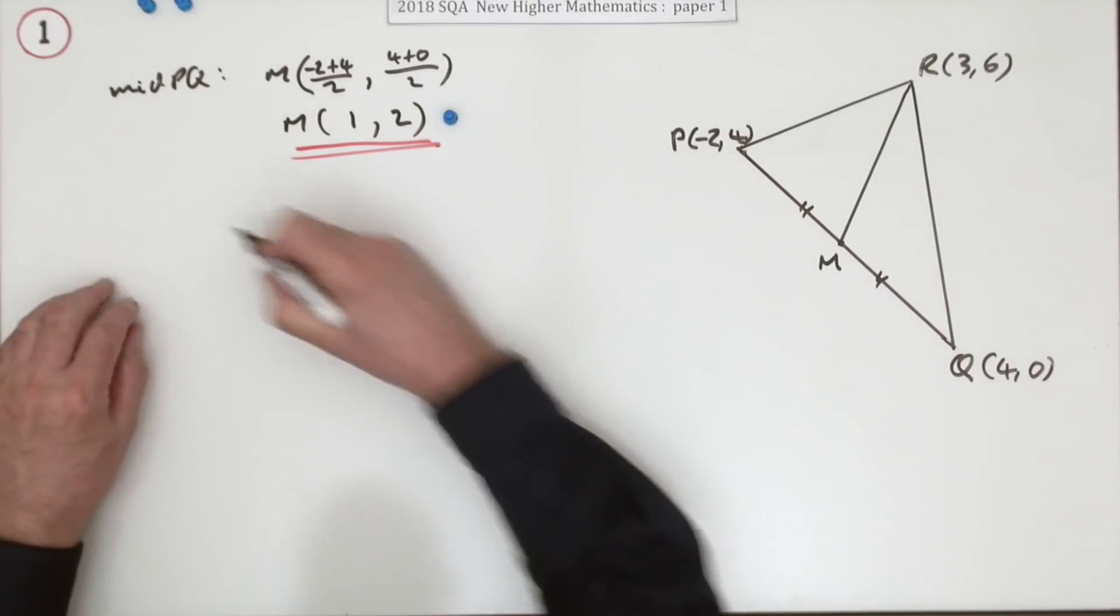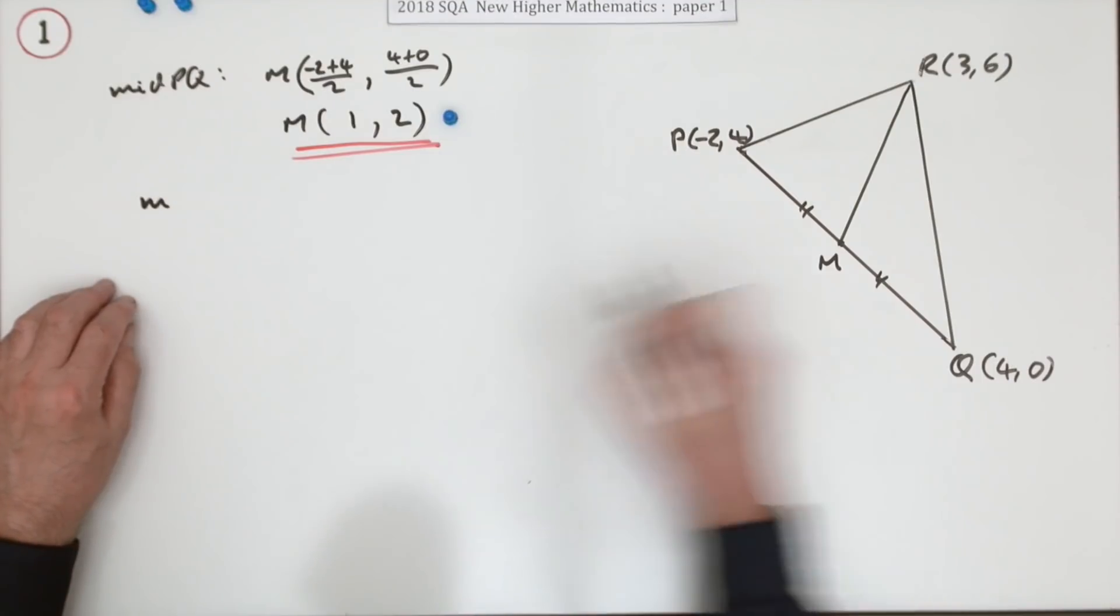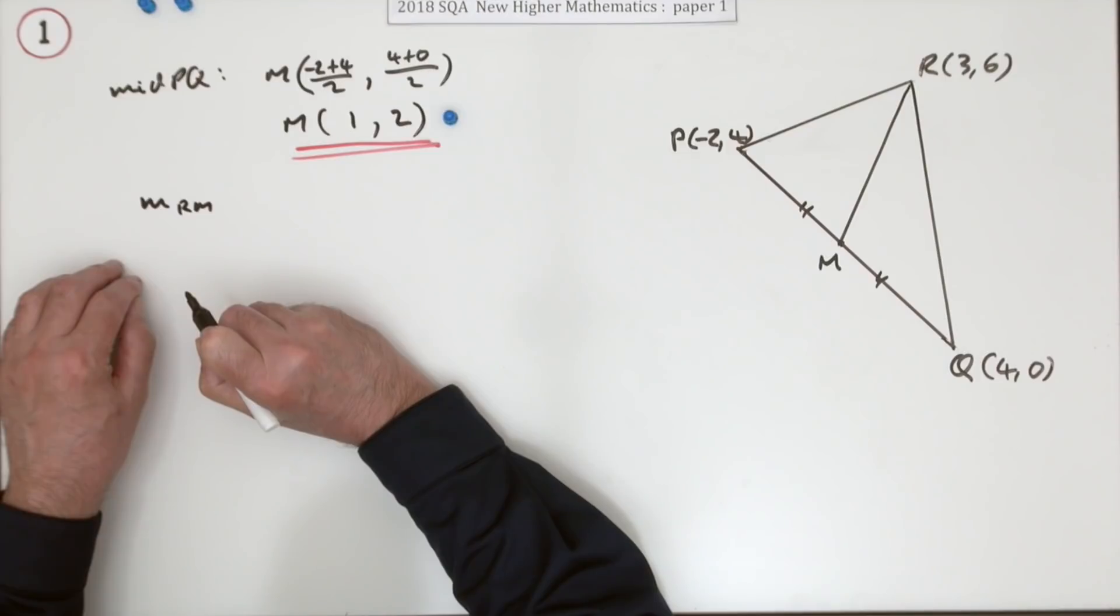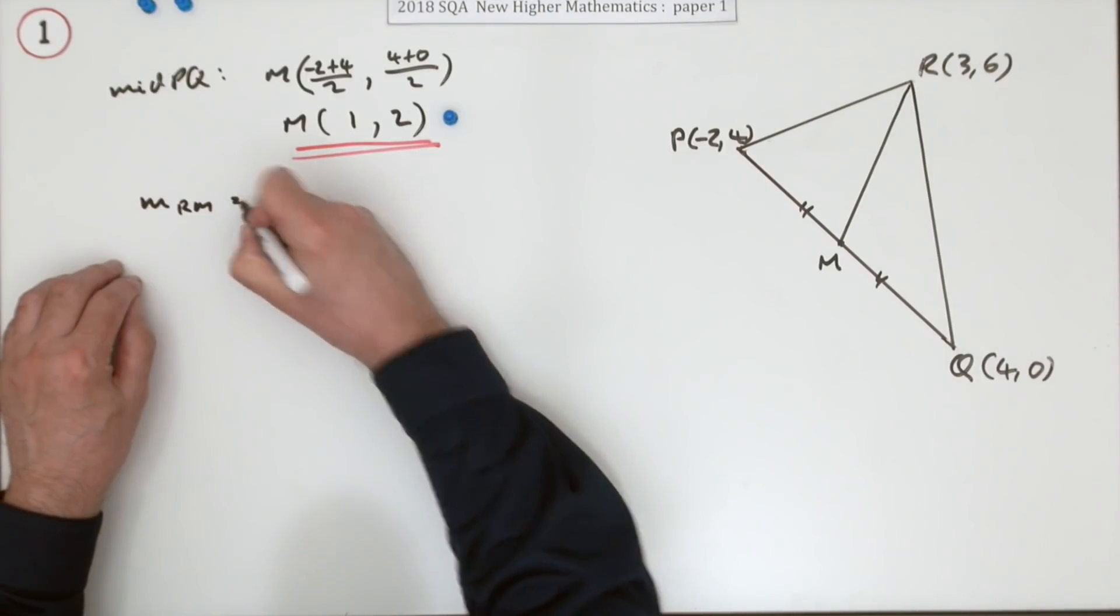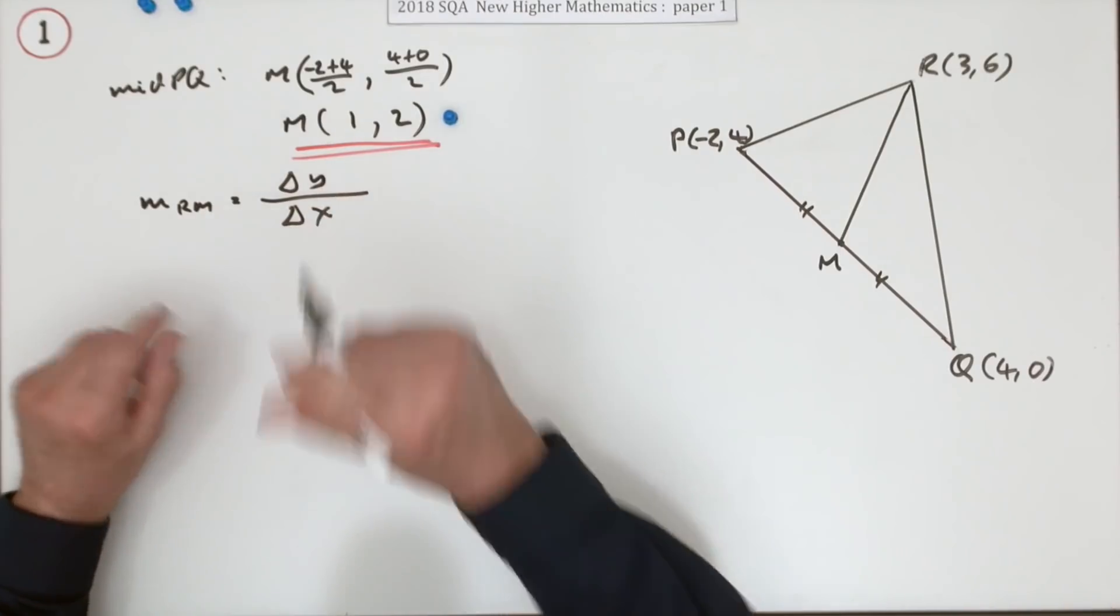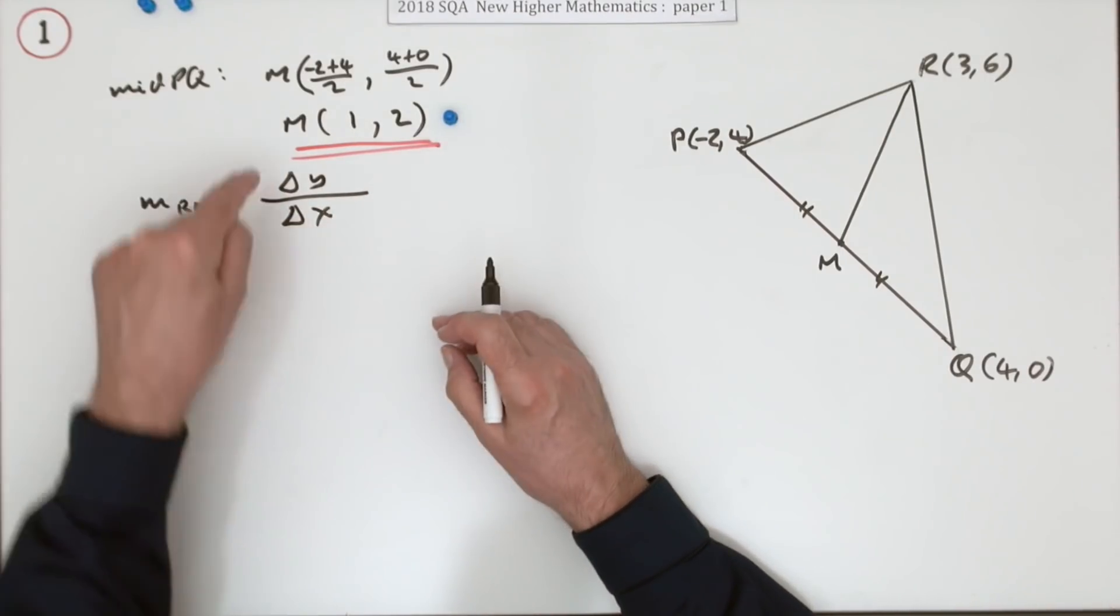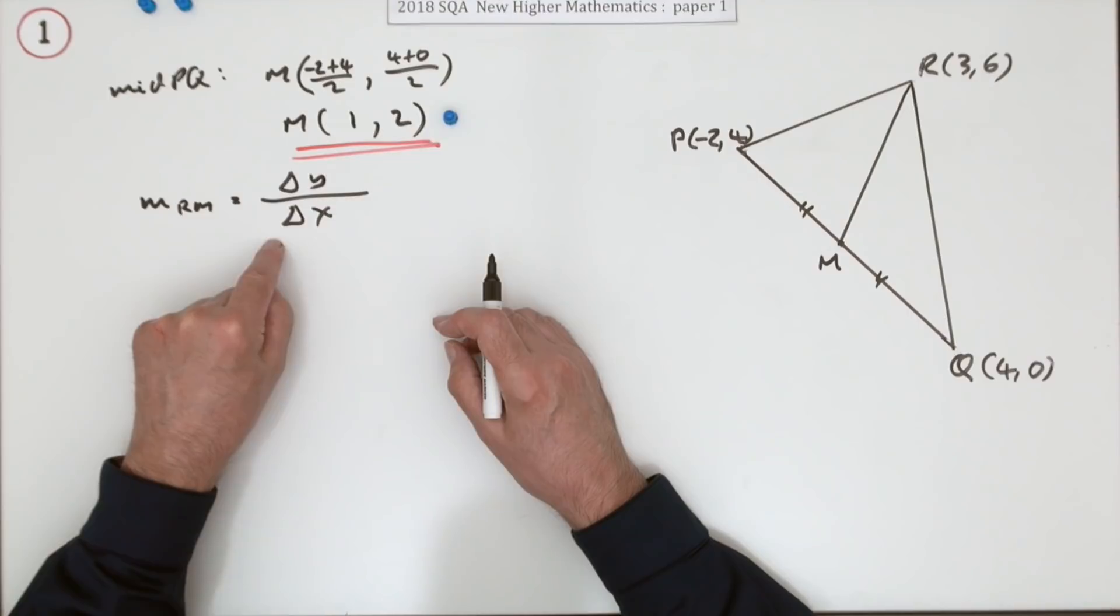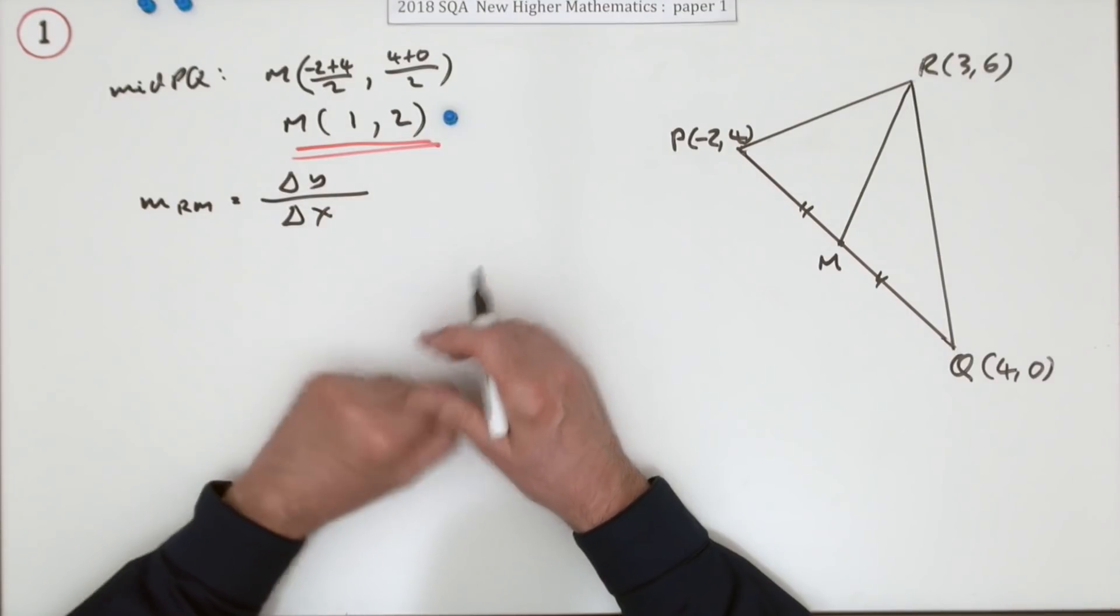Now you need the gradient. So what's the gradient of this line then? Which I'm going to call RM, because I took the trouble of giving it a name. Well, it's the difference in the y coordinates over the difference in the x coordinates. Or you could write y2 minus y1, meaning the difference in the y coordinates, and over x2 minus x1 for the difference in the x coordinates.